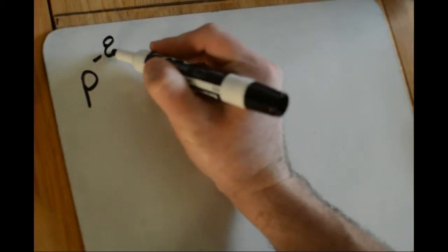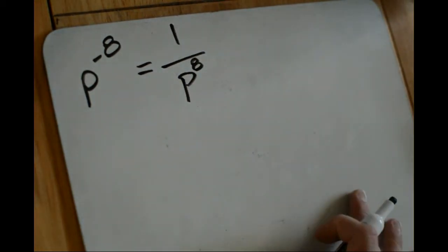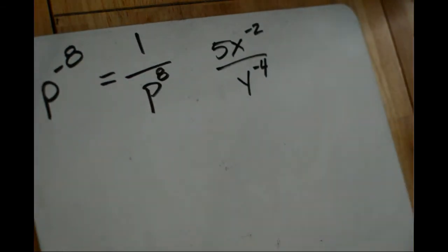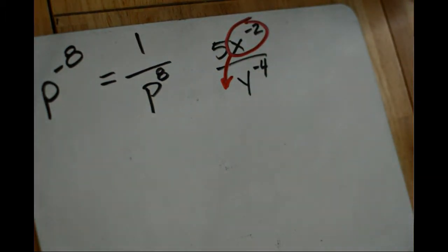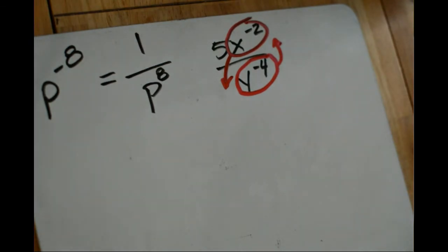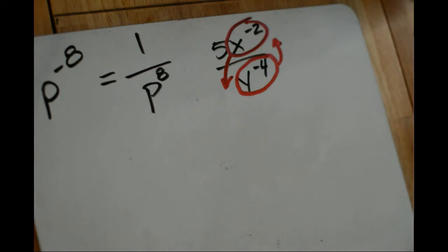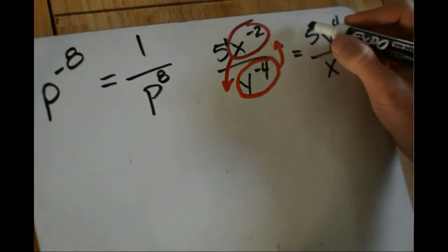Let's simplify a few expressions using these new rules. First, p to the negative eighth — we have a negative exponent, so that means reciprocal, giving us one over p to the positive eight. Here's another one: five x to the negative two over y to the negative four. Anytime you see a negative exponent, think reciprocal. The x to the negative two brings down to the denominator as x squared, and y to the negative four flips up to the numerator as y to the fourth. The five stays put since it's not raised to a negative exponent. So the result is five y to the fourth over x squared, which is completely simplified.